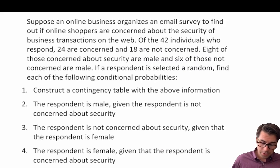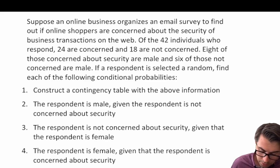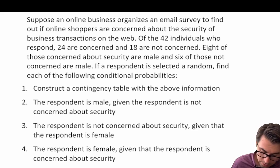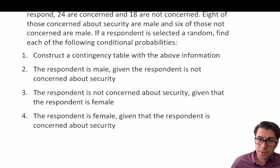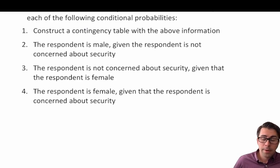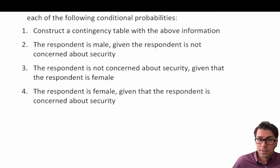Let's move on to the next question. An online business organizes an email survey to find out if online shoppers are concerned about the security of business transactions on the web. Of the 42 individuals who respond, 24 are concerned and 18 are not concerned. Eight of those concerned about security are male, and six of those not concerned are also male. If a respondent is selected at random, find each of the following conditional probabilities. First, they ask us to construct a contingency table. We're dealing with two categorical variables: sex (male or female) and concern status (concerned or not concerned).